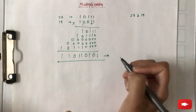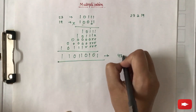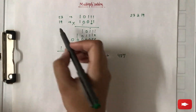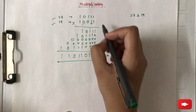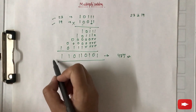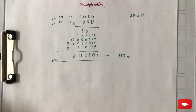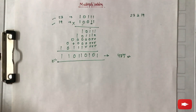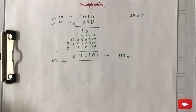Converting the binary result 101011011 into decimal gives us 437. So multiplying the two decimal numbers 23 and 19 also gives 437, confirming the result. This is how multiplication is simply done using paper and pen, but when a computer has to perform multiplication, there are two ways it can be done.